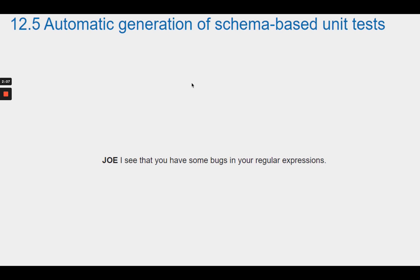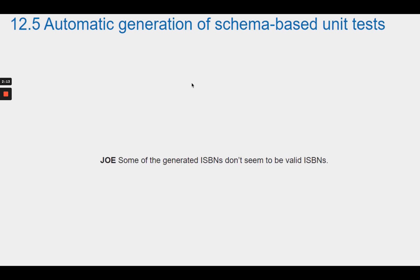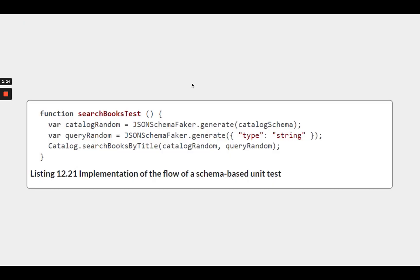Joe notices bugs in the regular expressions — some of the generated ISBNs don't seem to be valid ISBNs. Dave agrees and says he hates regular expressions. Joe says Dave is not the only one with that sentiment, and offers to show how to implement the flow of a schema-based unit test for catalog.searchBooksByTitle.